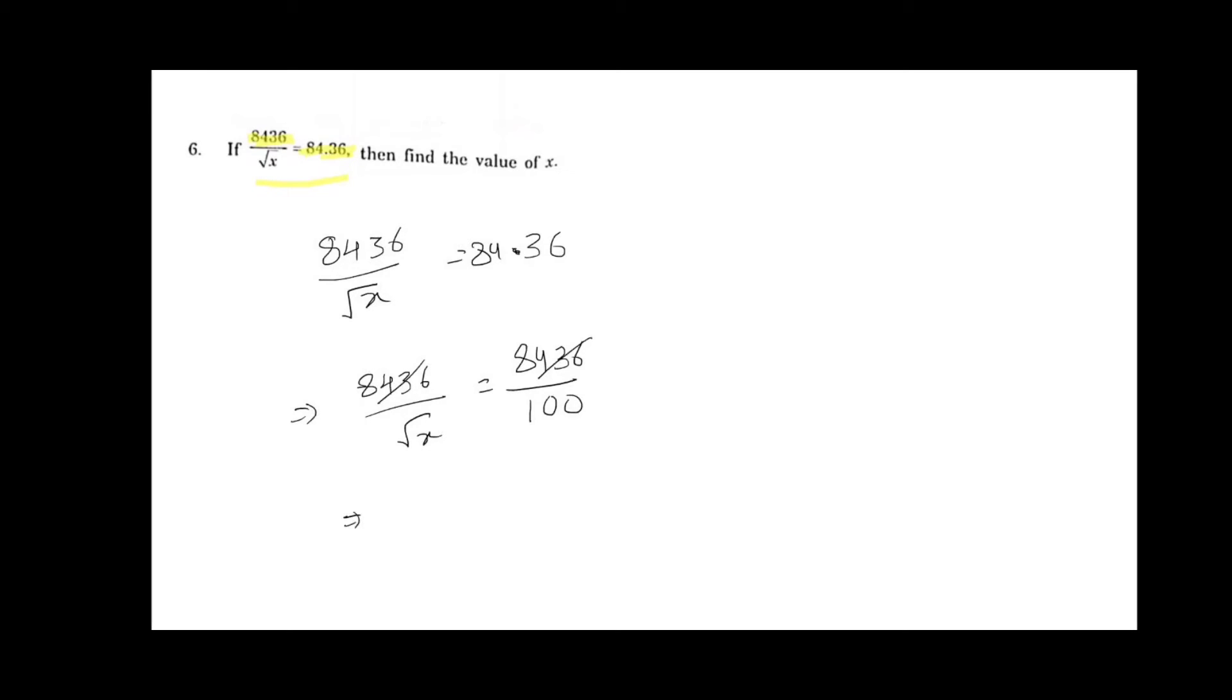Now by cross multiplication, 100 equals root x. Squaring on both sides, 100 square equals root x whole square. Square and root will be cancelled. Now x equals 100 square, which gives 10,000. That is the answer.